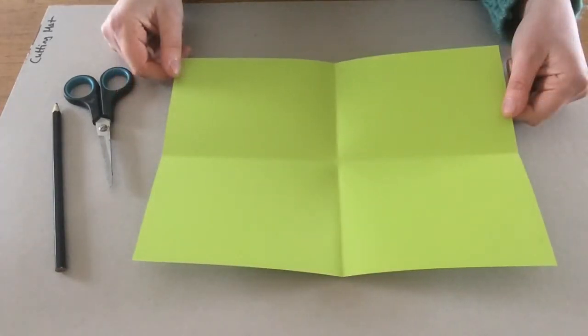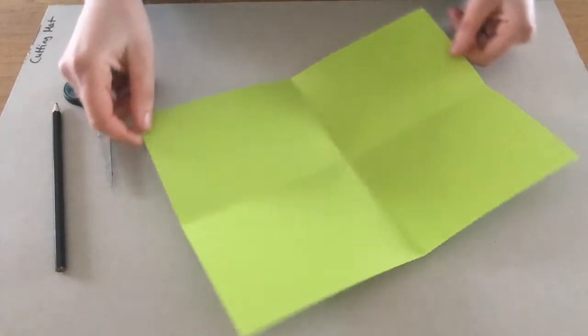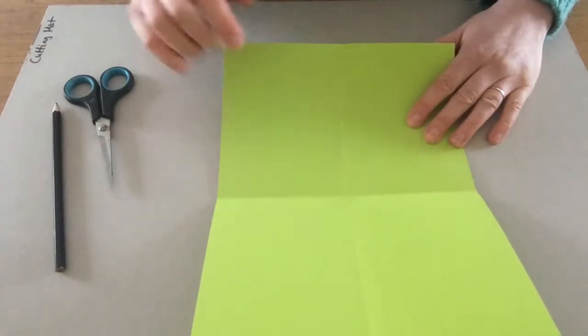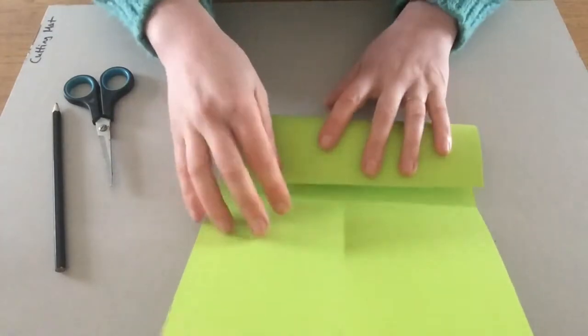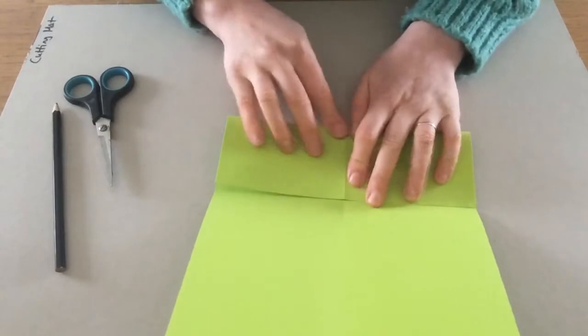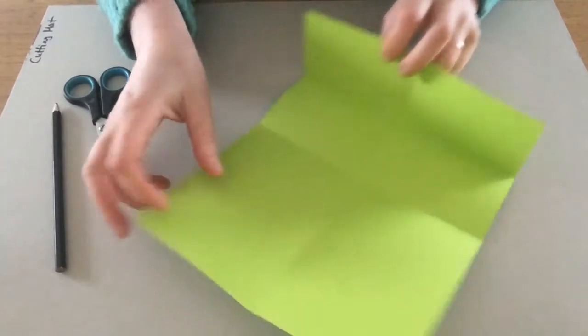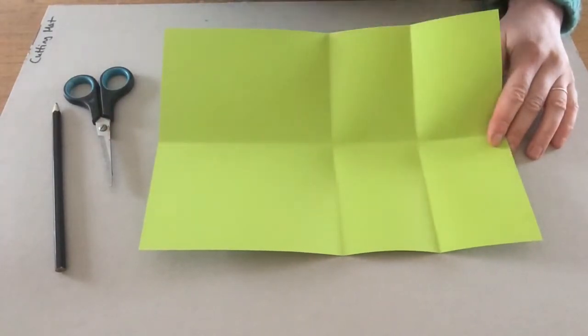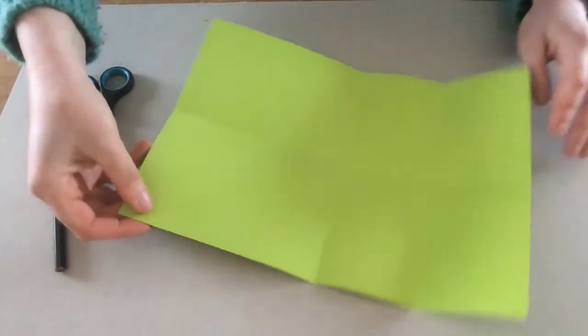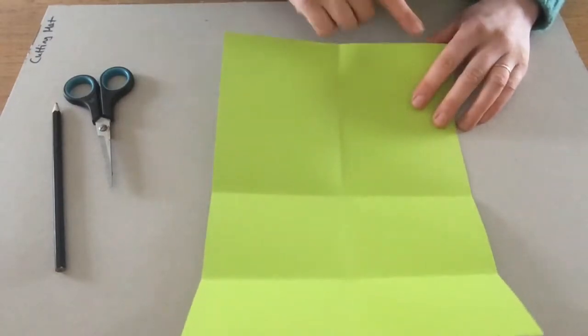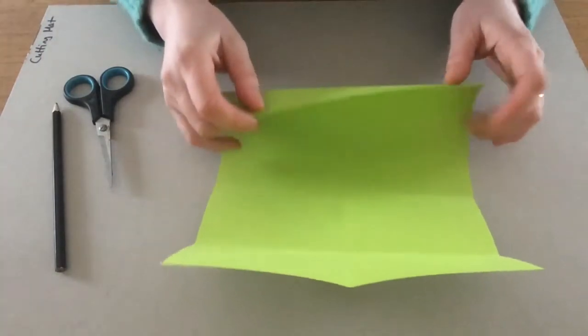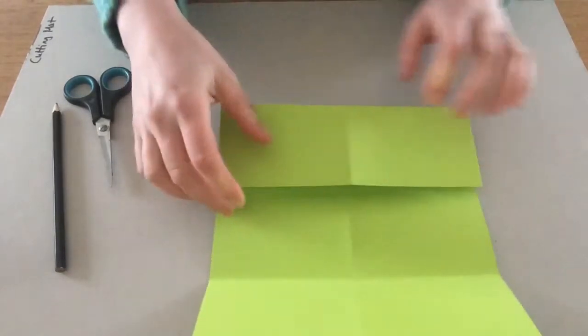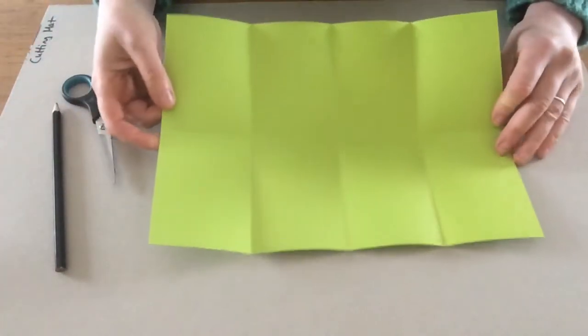Now we're going to fold our page into eighths. So to do that we're going to turn the page round and we're going to be folding the edge into the center. So I'm going to fold it forward and line it up with the center fold and press it down. So now we have one, two, three, four, five, six. So we need two more. So we're going to turn it around again and fold this edge into the center. So I'm going to fold it in, lining it up with the center fold and then press it down. So how many rectangles am I left with now?